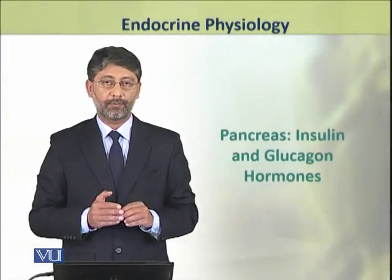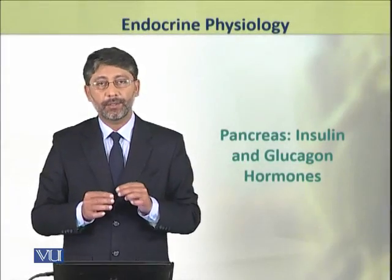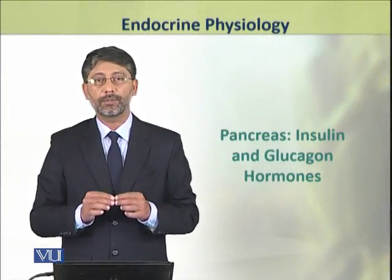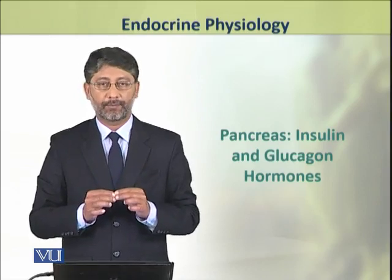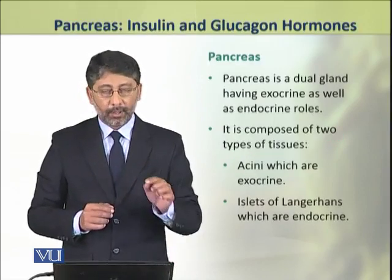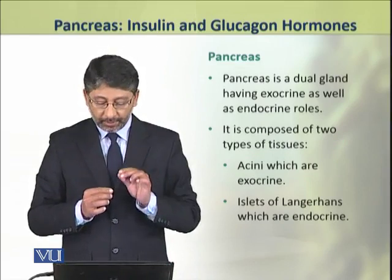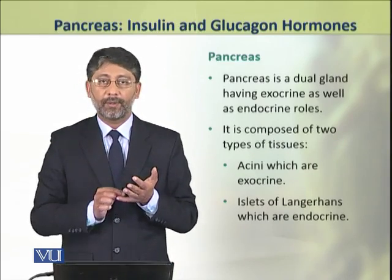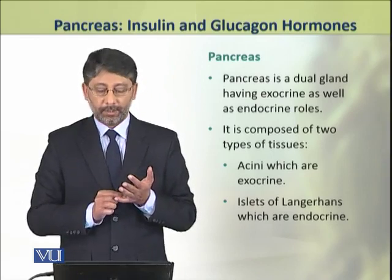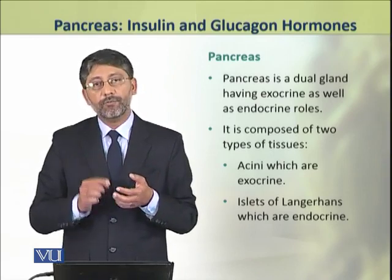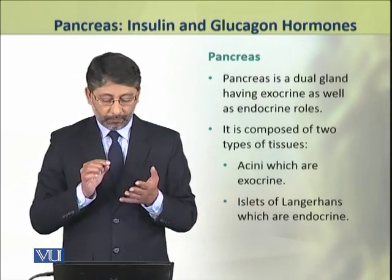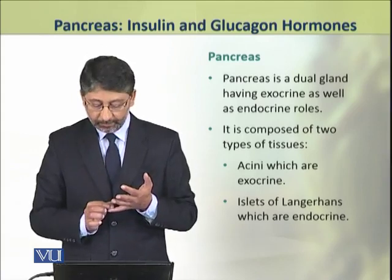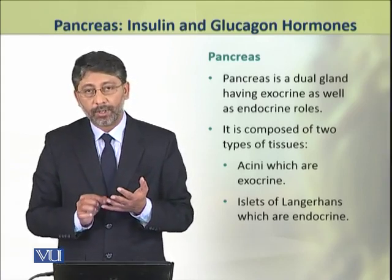In this topic we shall discuss insulin and glucagon hormones produced by the pancreas. Pancreas is a dual gland having exocrine as well as endocrine functions. It is composed of two types of tissues. One tissue is known as the acinus, which is exocrine.